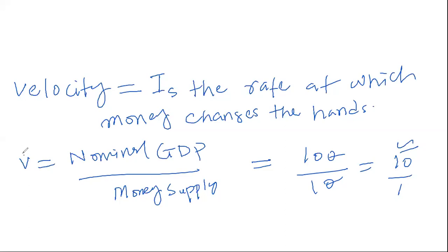Velocity is positively dependent on nominal GDP. When nominal GDP or production increases, keeping money supply the same, people's income increases and they buy more goods and services, so more money changes hands and velocity increases. Conversely, if nominal GDP stays the same but money supply increases, velocity will fall.